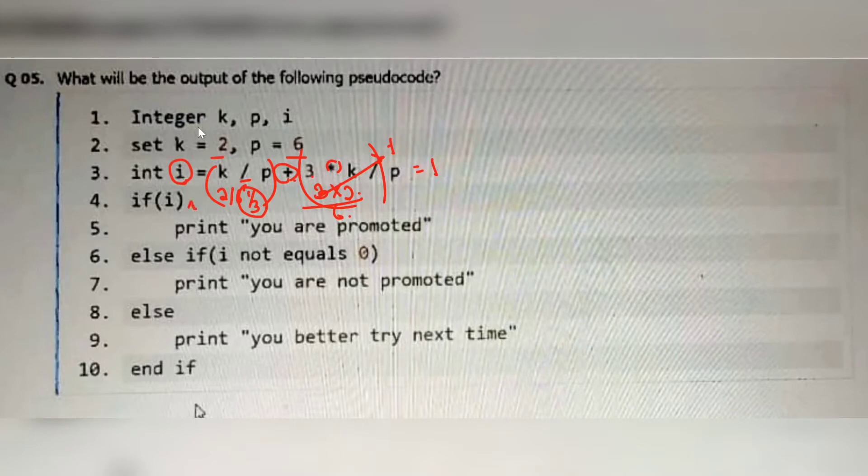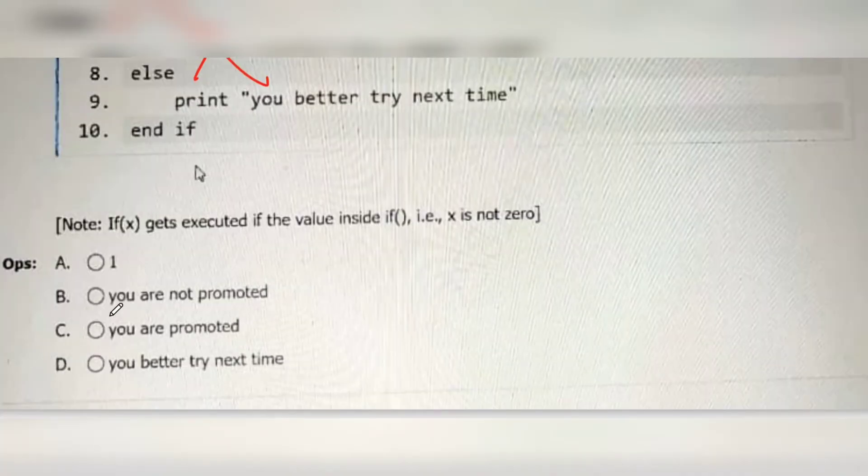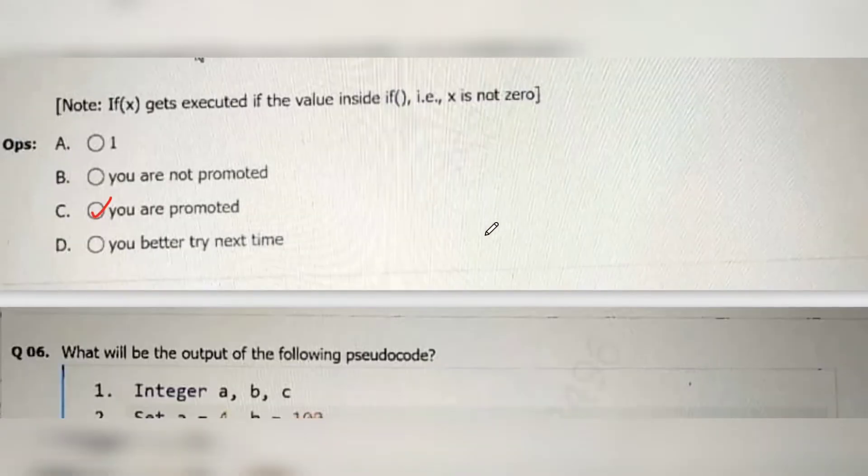If I means if 1, if 1 that is true so print you are promoted. So rest won't get executed, only output is you are promoted. So option C is correct. Then moving on to the next question.